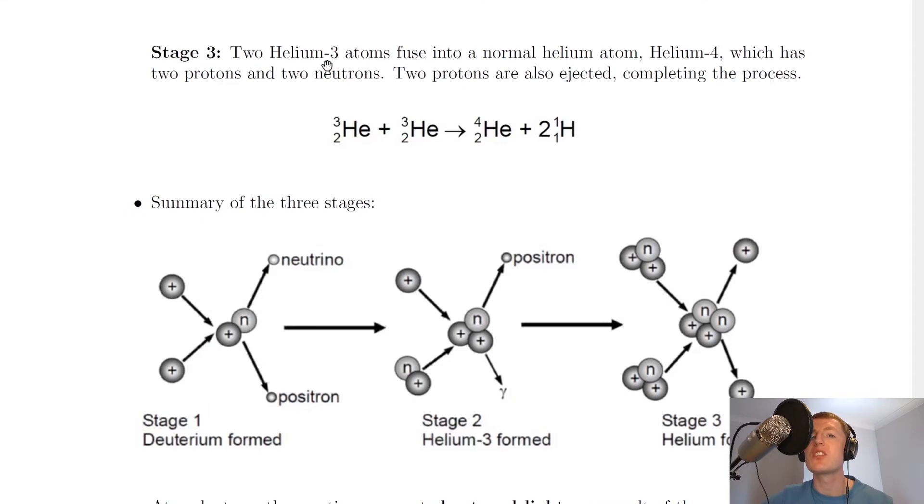Lastly, we have stage three. Stage three is when two helium-3 atoms fuse into a normal helium atom, which is helium-4, which has two protons and two neutrons, like an alpha particle.